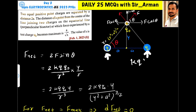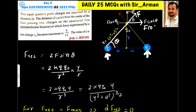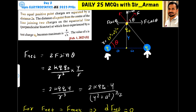The force exerted by the first charge on the test charge is given by k q q naught divided by r squared, where r is the distance from that charge to the test charge. Assuming angle theta here, this force f has two components: f cos theta along the line joining the two charges, and f sine theta perpendicular to the line joining the two charges.